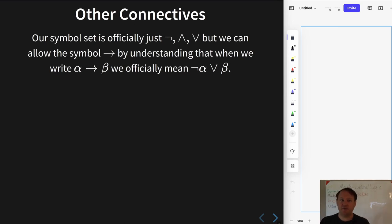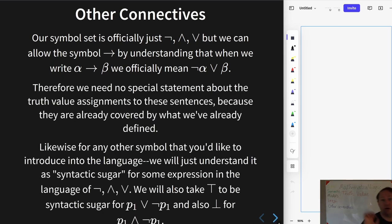So just to address some of the other symbols that may be familiar from an earlier course in symbolic logic, we will actually not have officially this right arrow symbol in our language. We will just take that to be notation that should always be translated into negation alpha disjunction beta. So that symbol is not officially in the language, it is always some kind of shorthand for this other sentence that is in the language. Therefore, we also don't need to say anything about how to do the truth value assignment to a conditional sentence, because it is already given by our semantics for negation and disjunction, and likewise for any other symbol that is familiar from an earlier symbolic logic course.